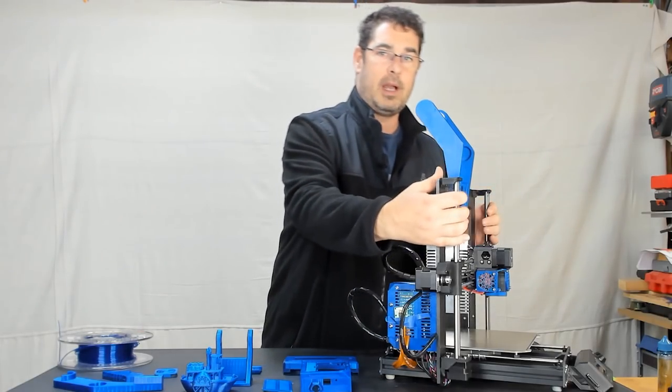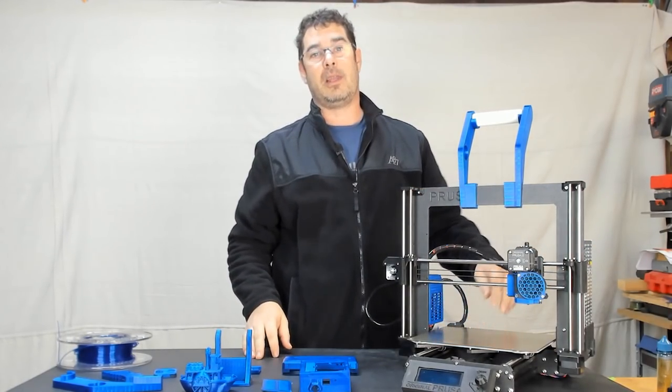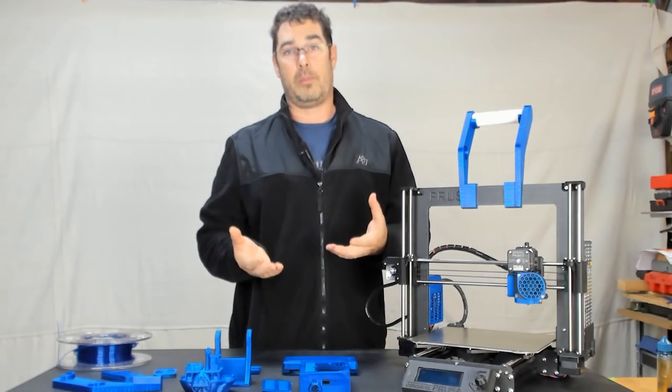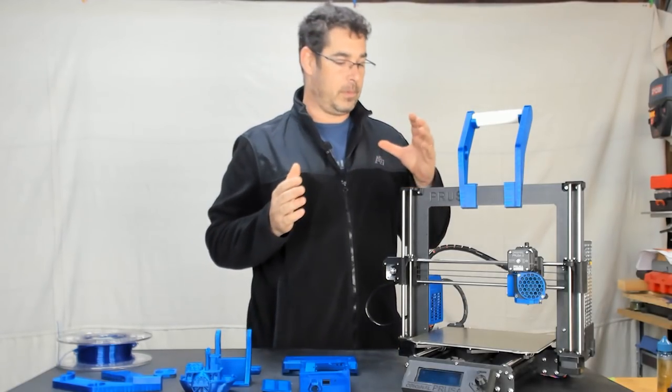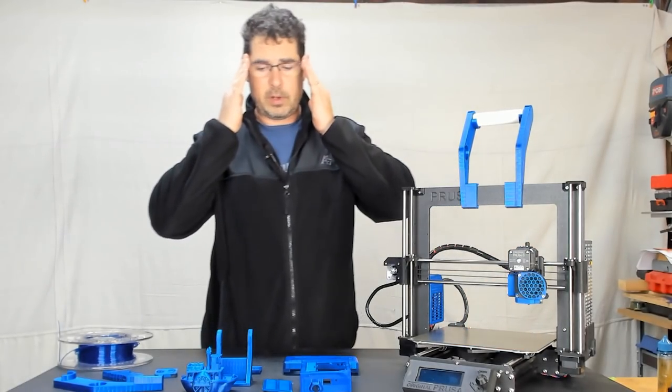With the PEI sheet on the Prusa Mark III I was able to print directly on the PEI. I did not need a separation layer. It sticks very well to it. I got no warping out of it. And I didn't need to add glue stick or anything else to enhance that stick like you might with other materials.